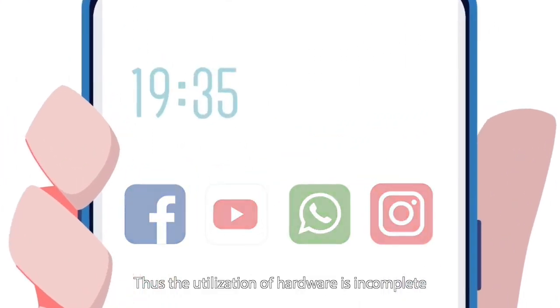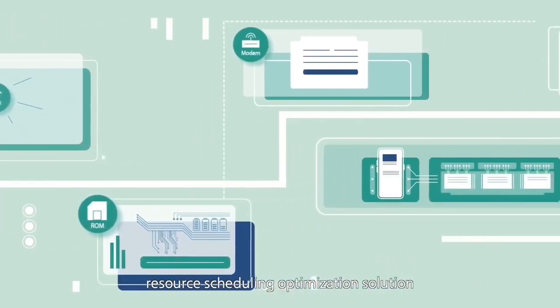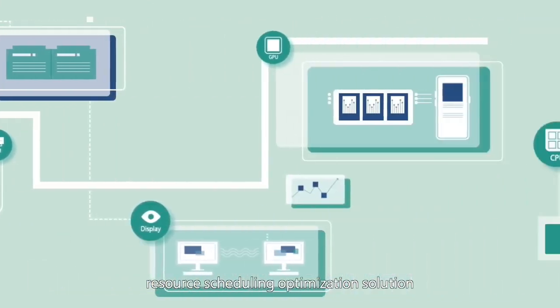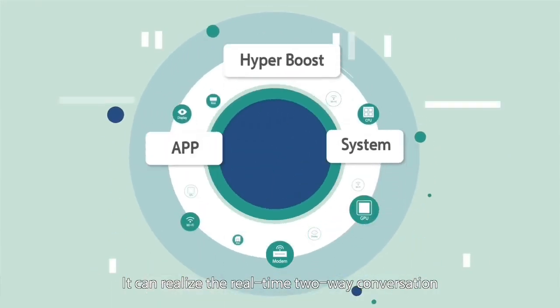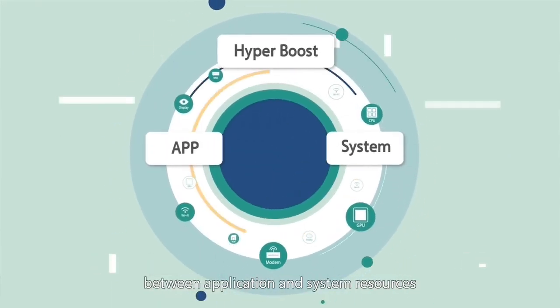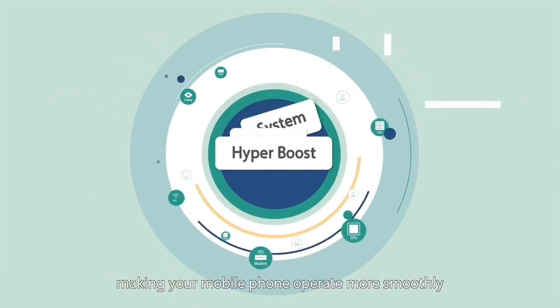Thus, the utilization of hardware is incomplete. To solve this problem, Oppo develops a full-scene system-level resource scheduling optimization solution named Hyperboost. It can realize the real-time two-way conversation between application and system resources, making your mobile phone operate more smoothly.